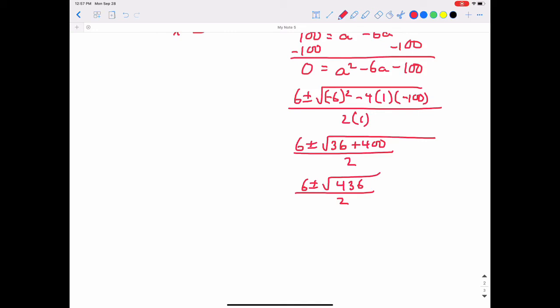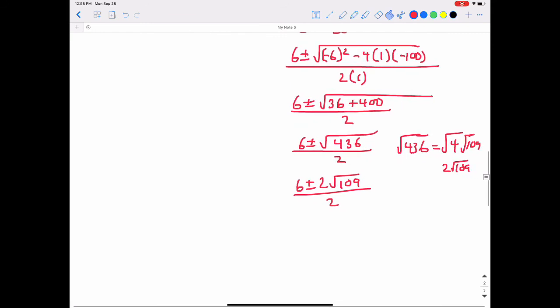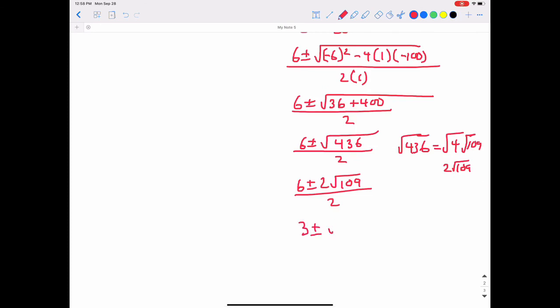And we are going to have to simplify the square root of 436. So what perfect square goes into 436? Well, I know 4 definitely does. We could probably get something larger than that. So does 16 go into 436? Honestly, I don't know off the top of my head. I'm going to have to check that out. And it does not, so we can't use 16. I'm going to go ahead and use 4. So the square root of 436 can be rewritten as 4 times the square root of 109. That'll be 2 square root of 109. So that would be 6 plus or minus 2 square root of 109 over 2. And divide everything by the 2 in the denominator. So that'll be 3 plus or minus the square root of 109.